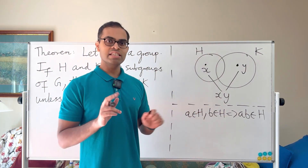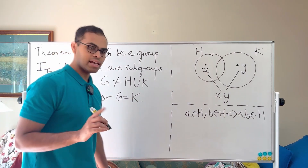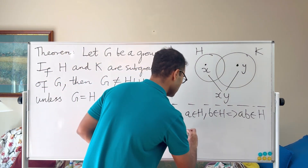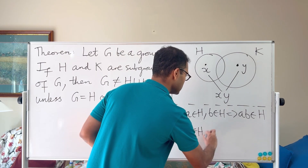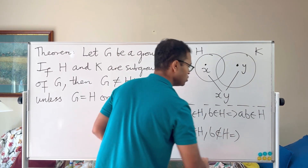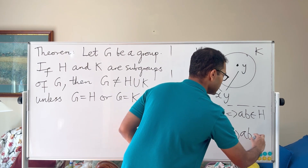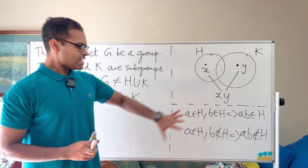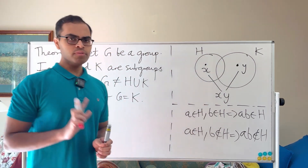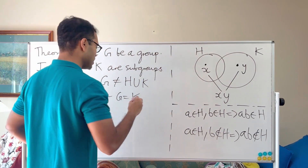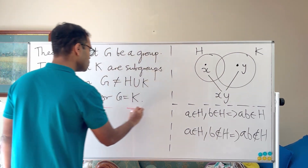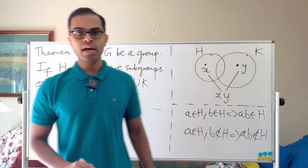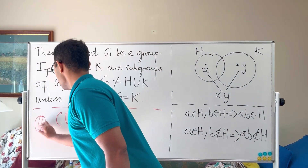Now here's a minor but important modification that is still true. If a is in H and b is not in H, then we can say that ab is also not in H. Why is this true intuitively? We can prove it with the group axioms.